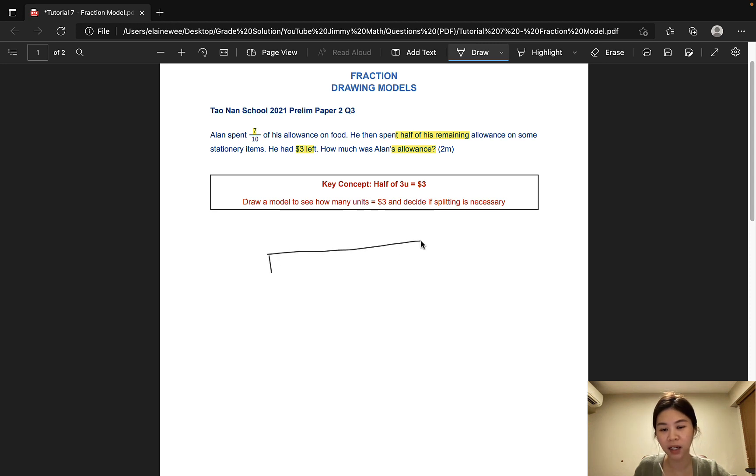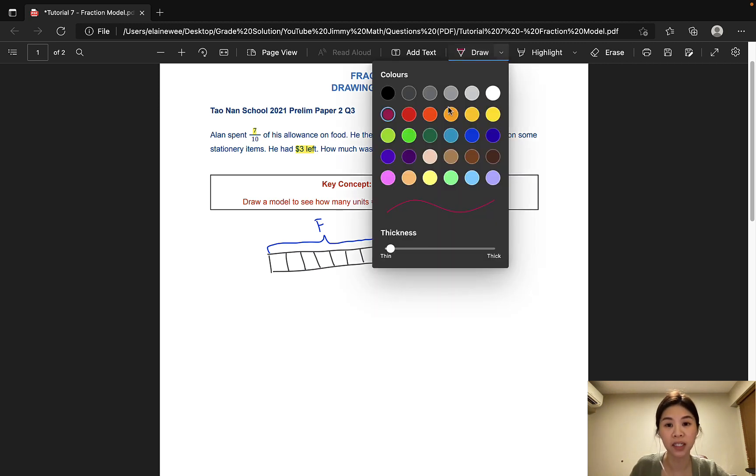Let's draw a long bar to represent his allowance at first, and that would be 10 units. He spent seven units on food. He then spent half of his remaining allowance on some stationary items. Now, we can see that his remaining allowance is three units. So three units cannot be split into half directly. Therefore, we have to split the middle unit into two halves to make this half of his allowance on stationary. And the other half would be three dollars.